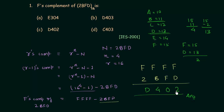So d402 is the F's complement of the number 2bfd. Out of the 4 options, option A is correct. This is all for problem number 1.